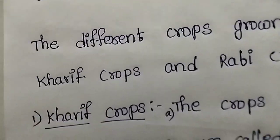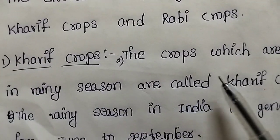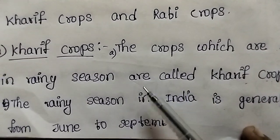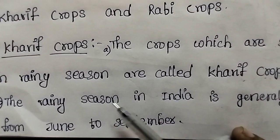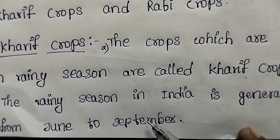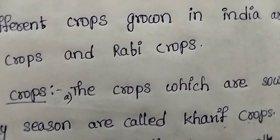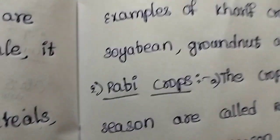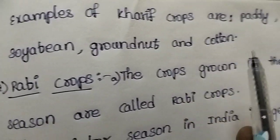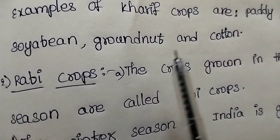Kharif crops are grown in the rainy season, which lasts from June to September. Examples are Maize, Paddy, Soya Bean, Groundnut, Cotton, etc.